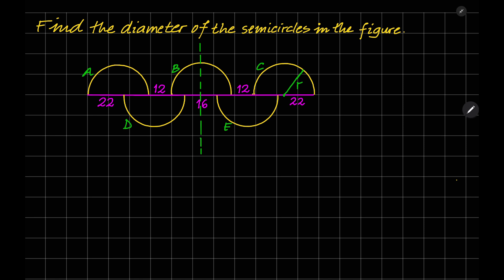If this is the symmetry line of the figure, then this line segment is 8 units and this is also 8 units. Let's also say that this line segment is a and this line segment is b.